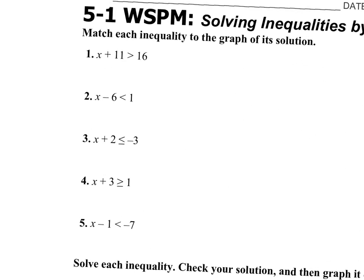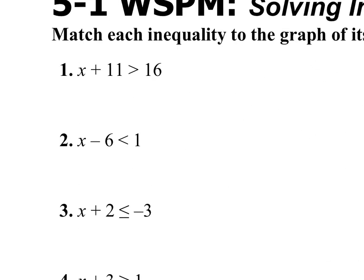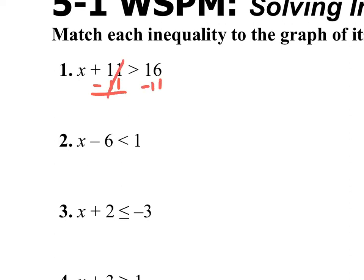So, number one — remember, solving an inequality is just like solving an equation. You want to get the variable by itself on one side of your inequality instead of your equal sign. So your x is on the left side of this inequality. There's a plus 11 right there. Let's get rid of that plus 11 by doing the opposite, which is minus 11. What you do to one side, you do to the other side. And you will have x being greater than 5.